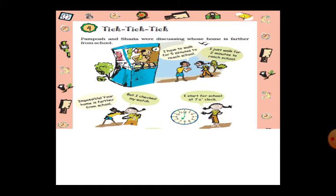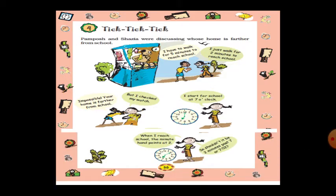But Shazia is telling: I checked my watch already. She told she starts for school at 7 o'clock. The small hand is showing 7 and the big hand is at 12, so it is 7 o'clock. When she reaches school, the minute hand points at 2. So she is reading the time as 2 minutes past 7, that is 7:02.